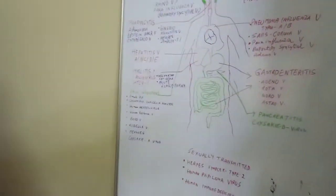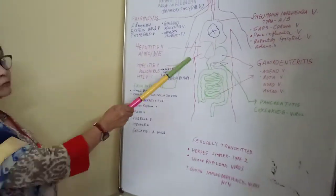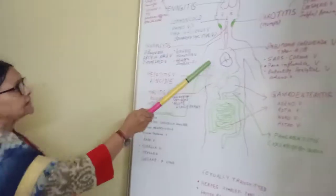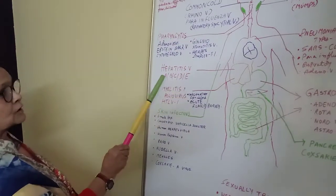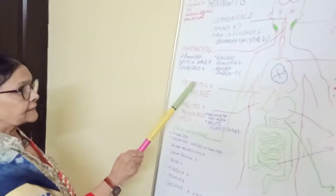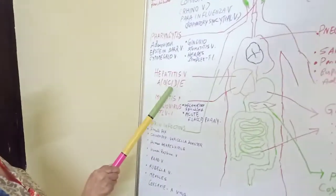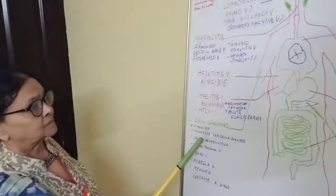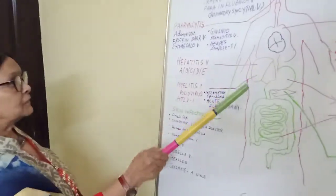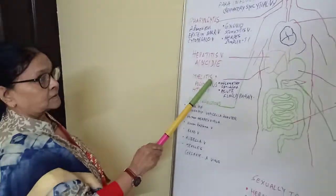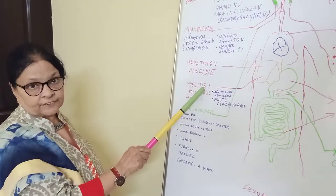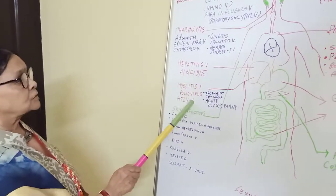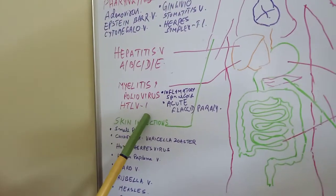Coming a little lower to the liver. The liver is affected by hepatitis virus, of which there are five types: Hepatitis A, B, C, D, and E. Another disease associated with this region is poliomyelitis, caused by poliovirus or HPV type 1 virus.